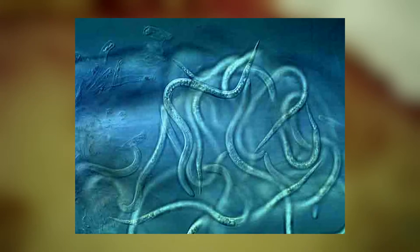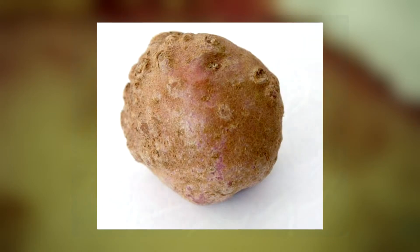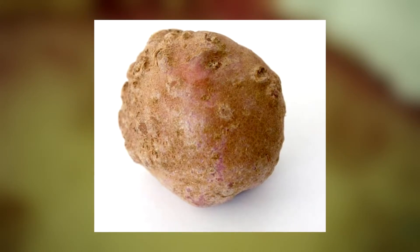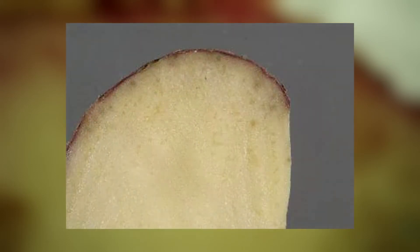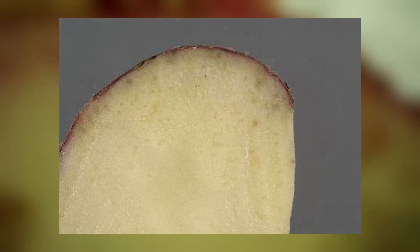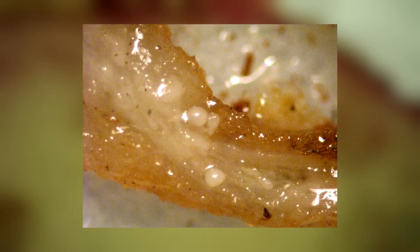Самцы участия в размножении не принимают. На картофеле первая генерация нематоды развивается на корнях, а все последующие – на корнях и внутри клубней. Самки способны глубоко внедряться в клубни. В этих местах коровые клетки клубня и паренхима распадаются, создавая благоприятную для развития самок и яиц среду обитания. Окружающие клетки пробковеют, становятся коричневыми и образуют защитный слой вокруг яиц.